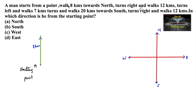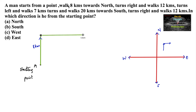Then he turns right and walks 12 km. When he is in the direction of north and takes a turn, he is moving towards the east. Towards east direction he is moving for 12 km. So let us consider this as 12 km.